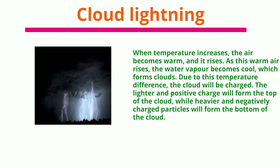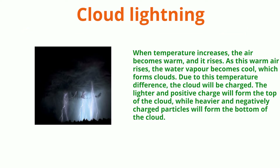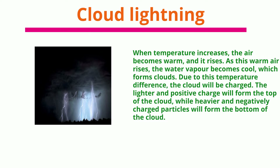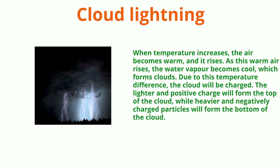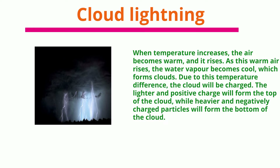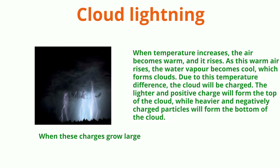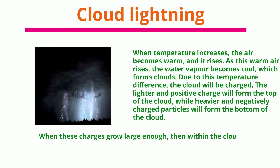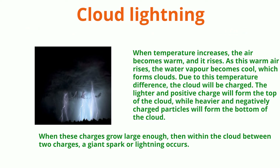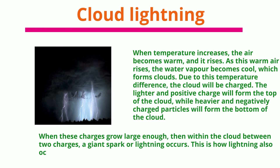When temperature increases, air becomes warm and rises. As this warm air rises, water vapor cools and forms clouds. Due to temperature differences, the cloud becomes charged — lighter, positive charges form the top of the cloud, while heavier, negatively charged particles form the bottom. When these charges grow large enough, a giant spark or lightning occurs between charges within the cloud, caused by the electric force field.